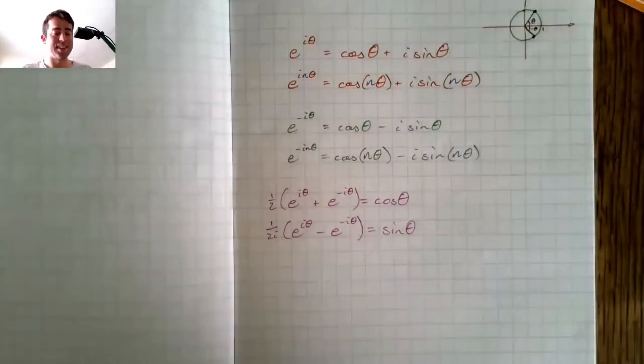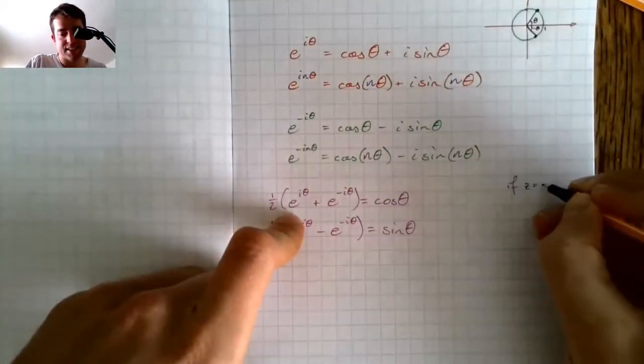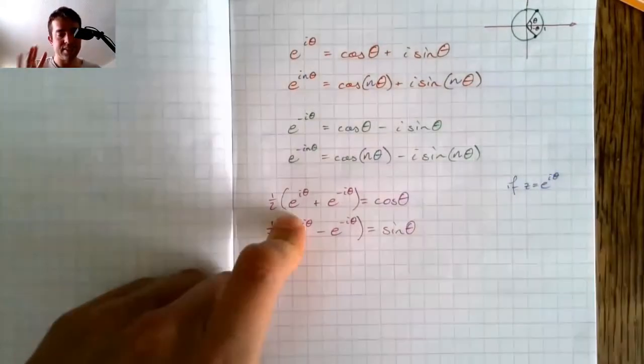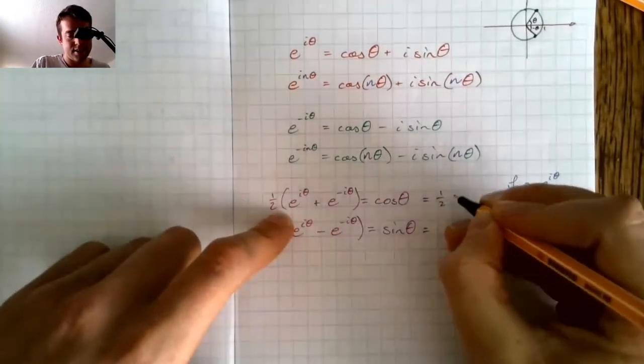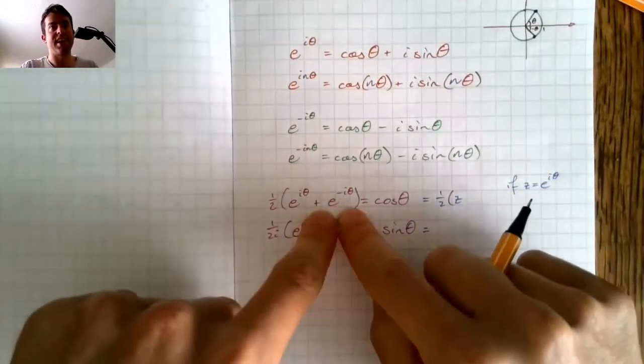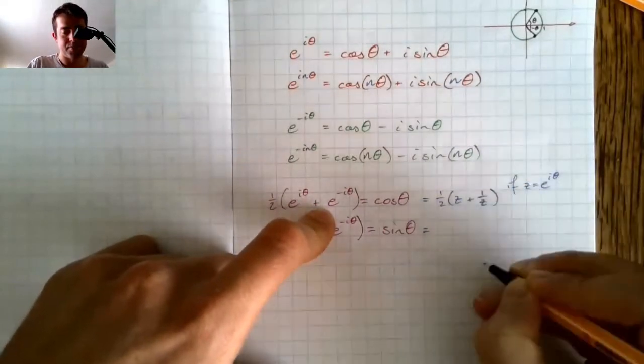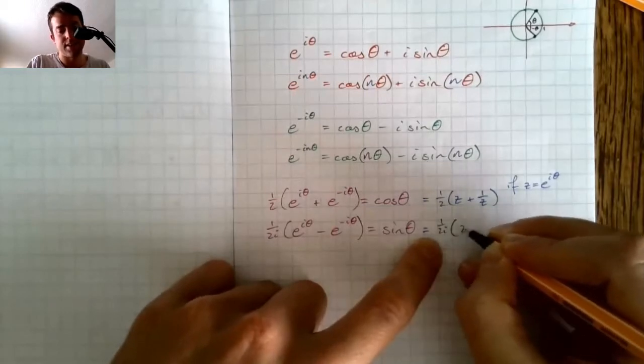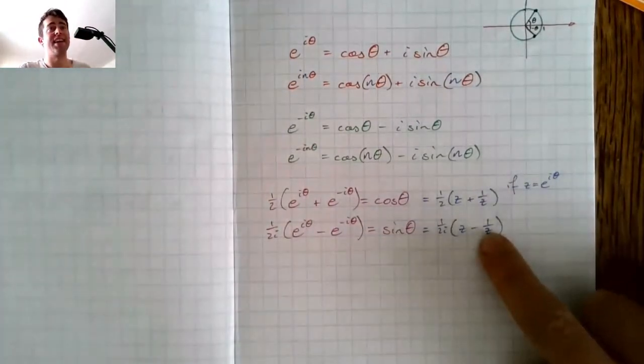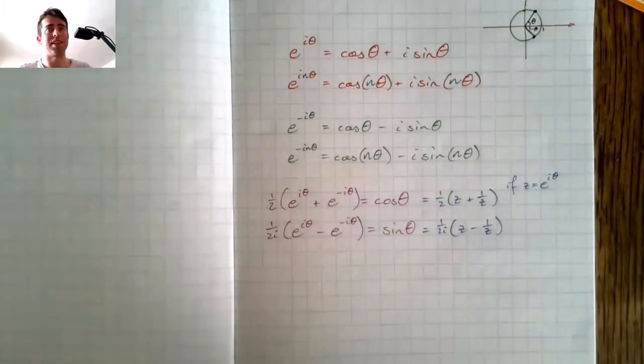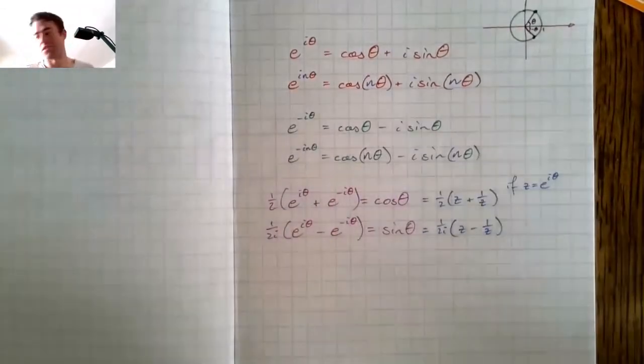Now these are sometimes written in terms of a z where we define if z is e to the i theta, then we can also write these as well, this is z here and this is z to the power of minus one, which we'd also write as one over z. And similarly here, one over two i, z minus one over z. And just defining this in terms of the z is going to make this next step a little easier to write out. That's all it is. Now since I've got these ones with an n in there, I might as well write these ones with an n in there as well.